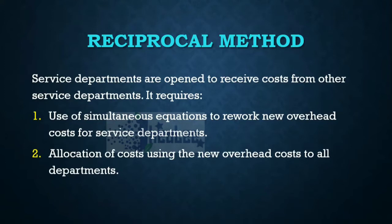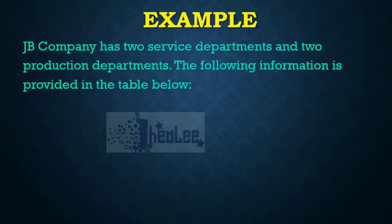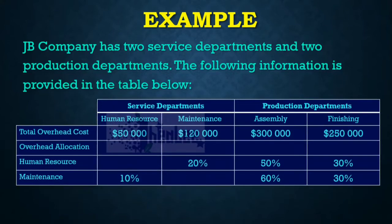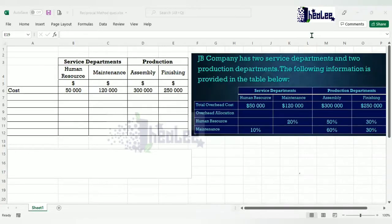Let us look at the question. JB Company has two service departments and two production departments. The following information is provided in the table below. This question is the one I've been using throughout the previous sessions with other methods. This method requires two things. The first thing is to create simultaneous equations so that you can rework the overhead, and the second thing is that you will allocate those overheads. So the first thing we're going to do is create simultaneous equations for the two service departments.